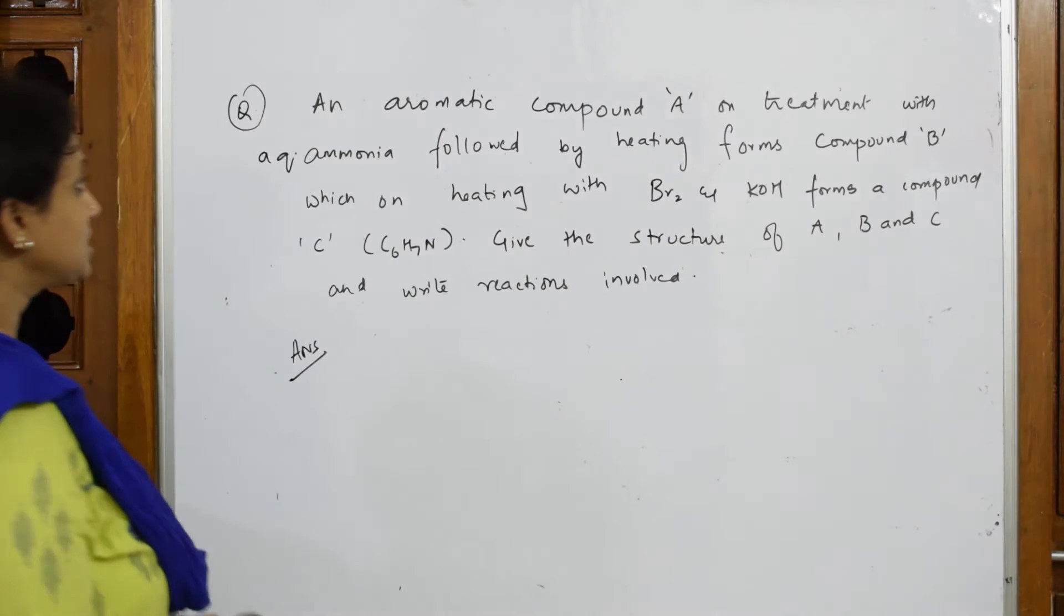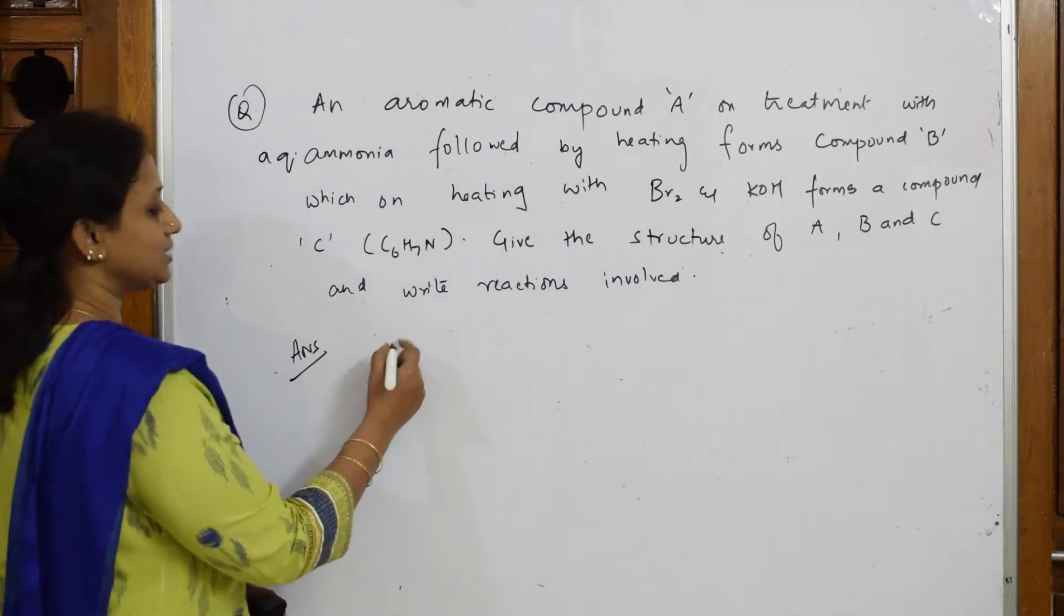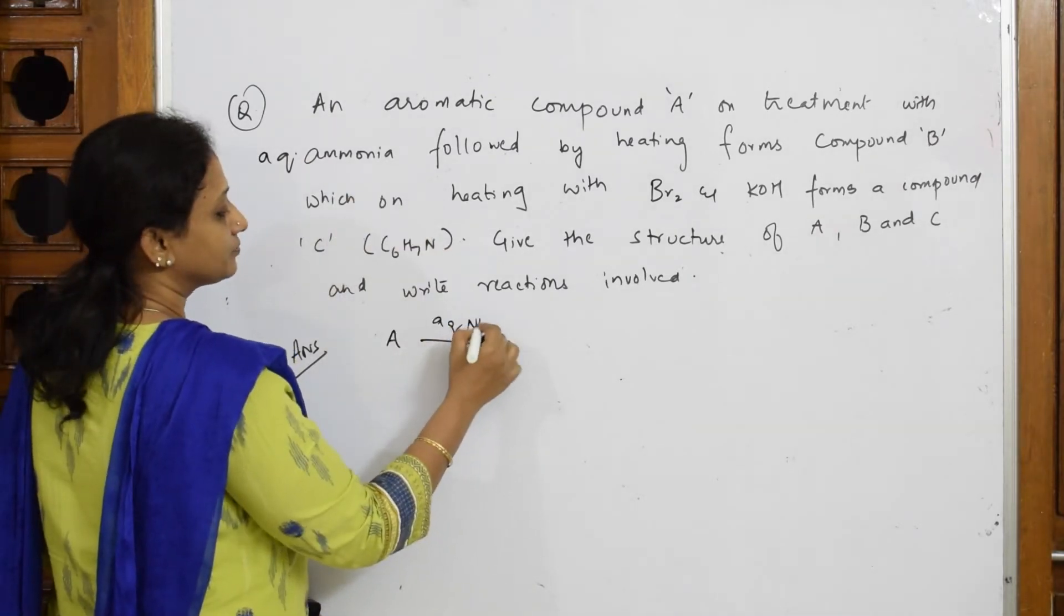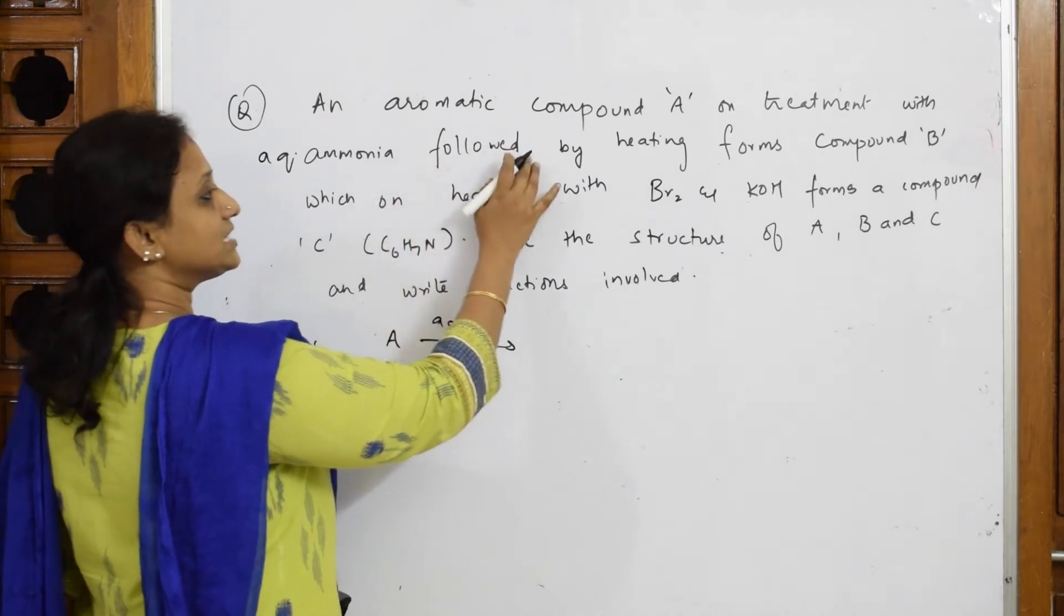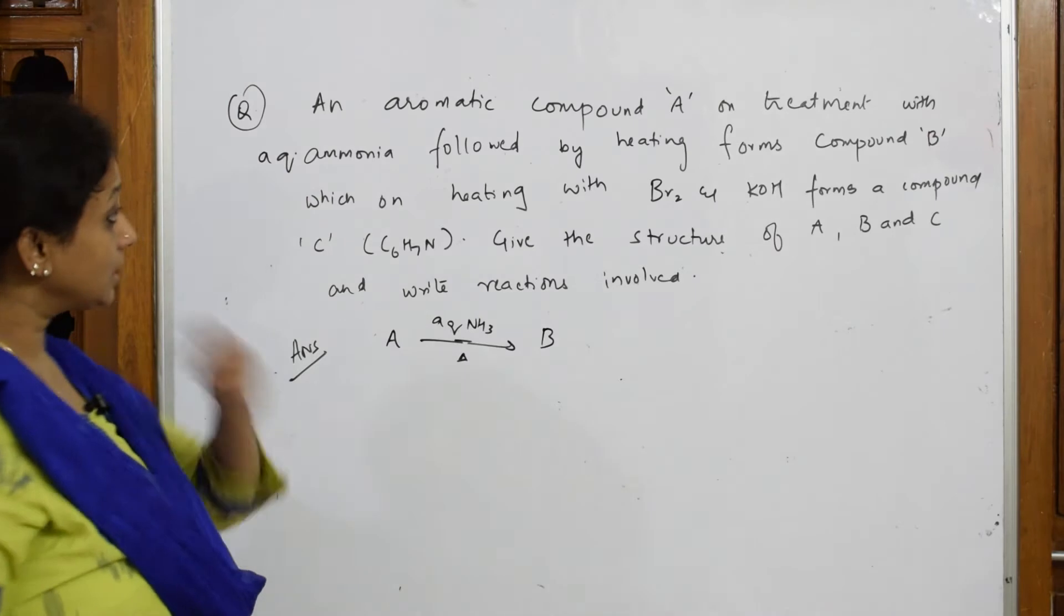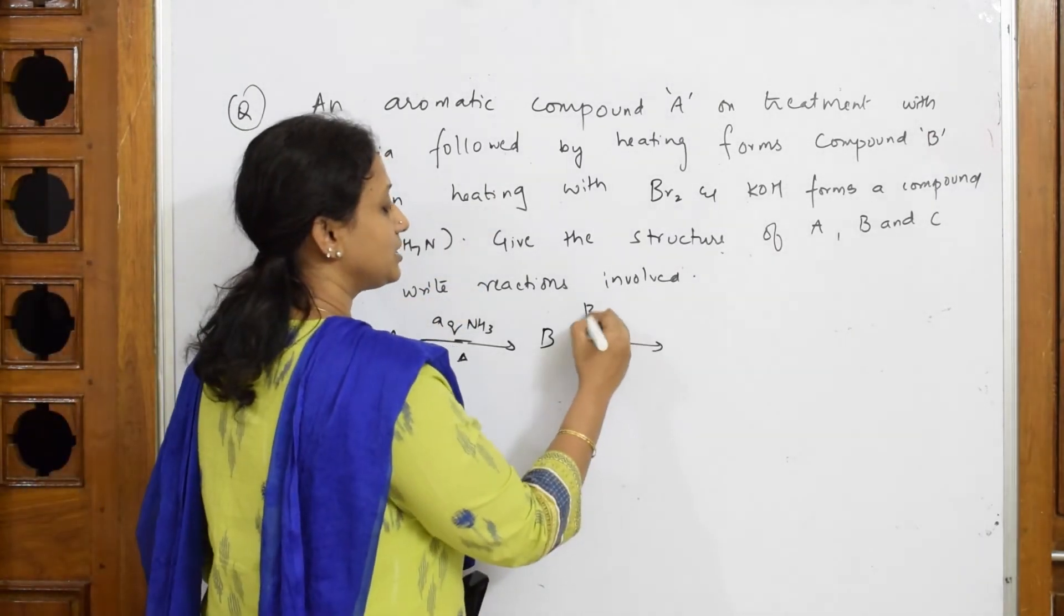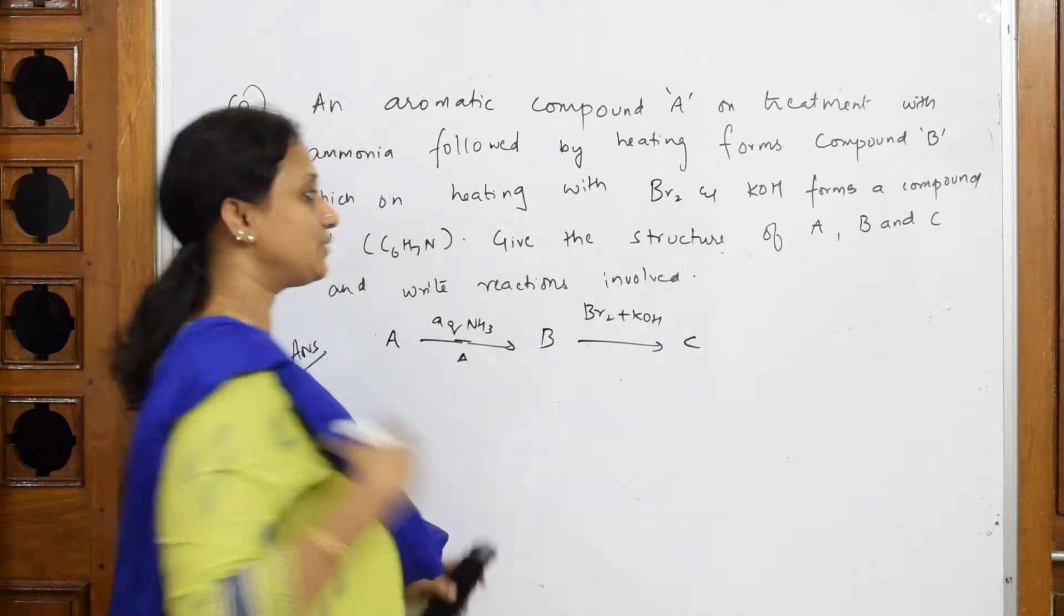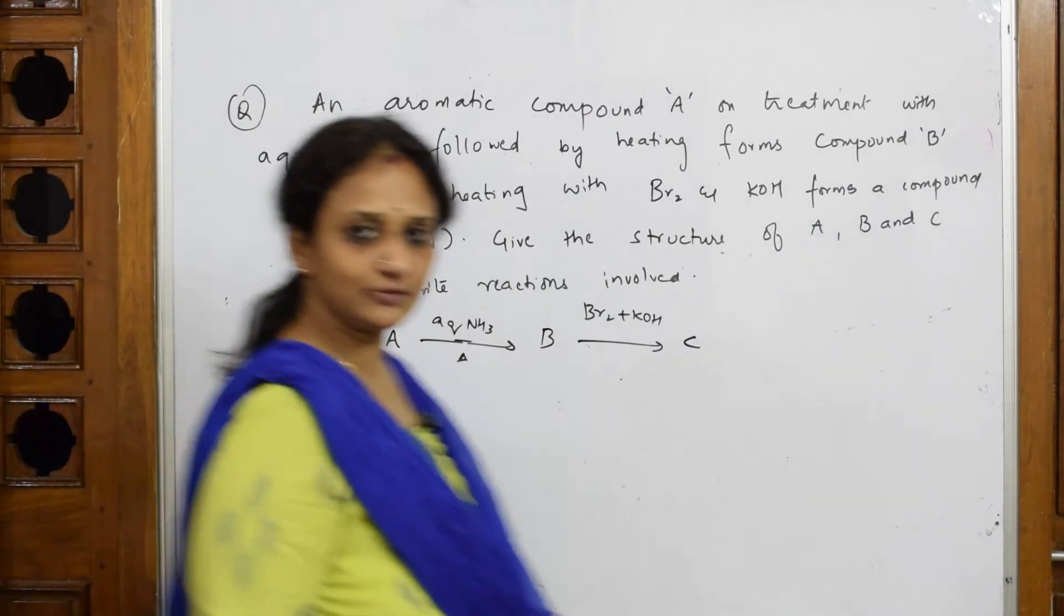Let's see. They said an aromatic compound A on treatment with aqueous ammonia. Let us write the basic thing: A is treated with aqueous ammonia. A on treatment followed by heating forms compound B, which on heating with Br2 and KOH forms compound C. And they've given me the formula for compounds, because at least if one clue is given to me it's easy to do the whole thing.